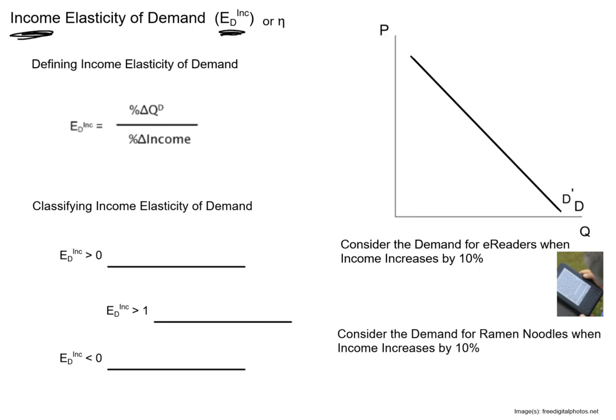This is the notation I'm going to use: E with a D subscript and INC. Another common notation you might see is the Greek letter eta. Let's define it. The income elasticity of demand is the percentage change in quantity demanded divided by the percent change in income. Notice there are no absolute values here.